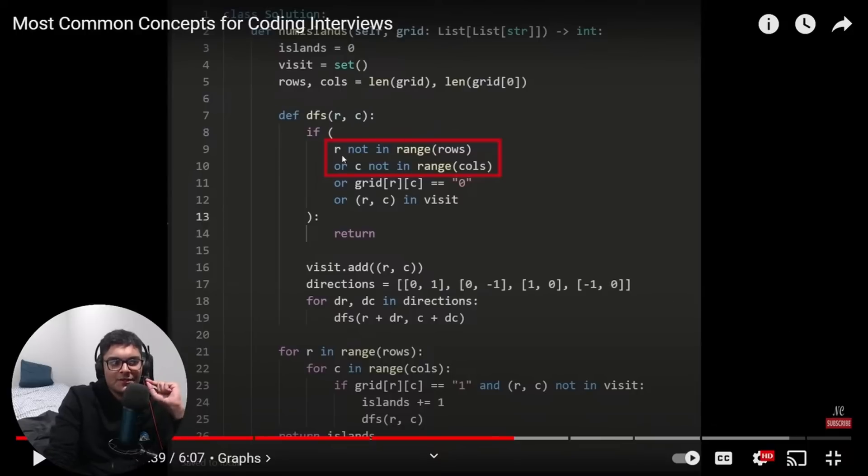Can you guys tell me what's going to go wrong if we don't check if the row or column is out of bounds? Yeah, out of bounds error, right?